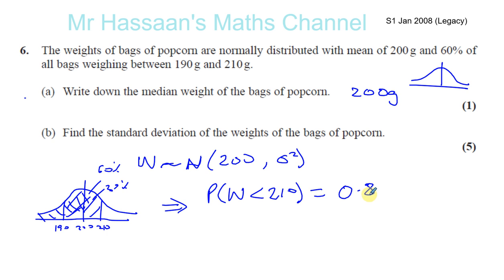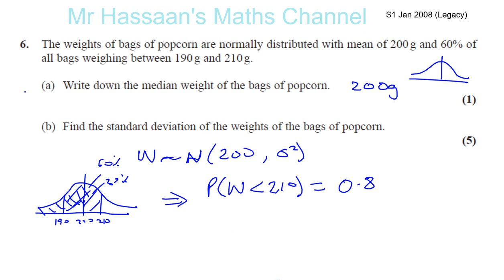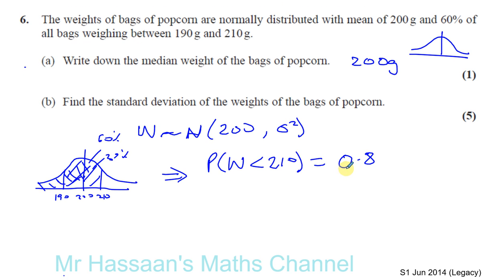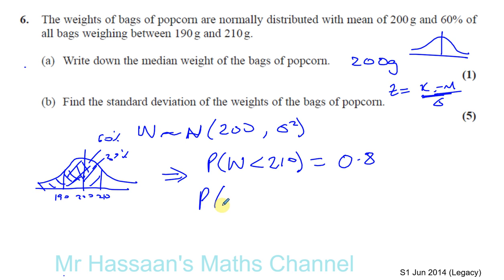We know that Z equals X minus the mean over the standard deviation — that's the standardized equation. So the probability that (X minus the mean) over the standard deviation is less than (210 minus 200) over sigma equals 0.8. That's the probability that Z is less than that value, equal to 0.8. So we've just standardized that.